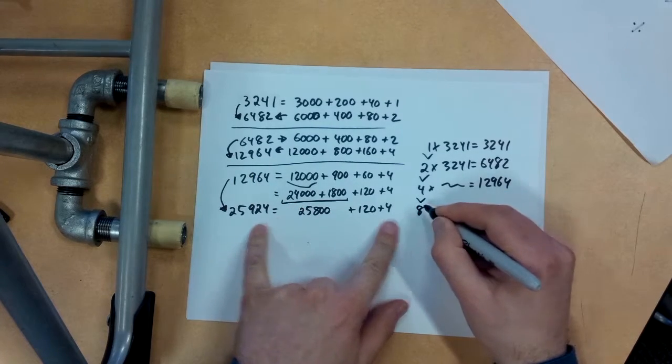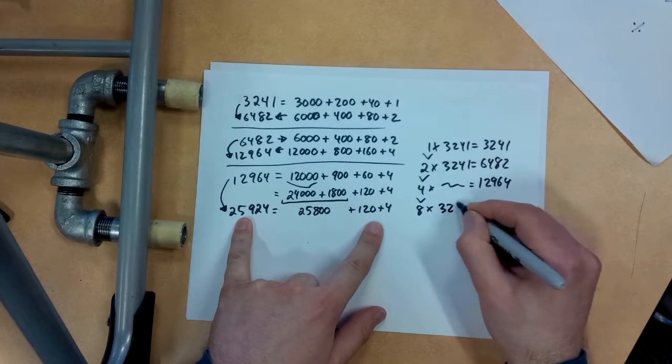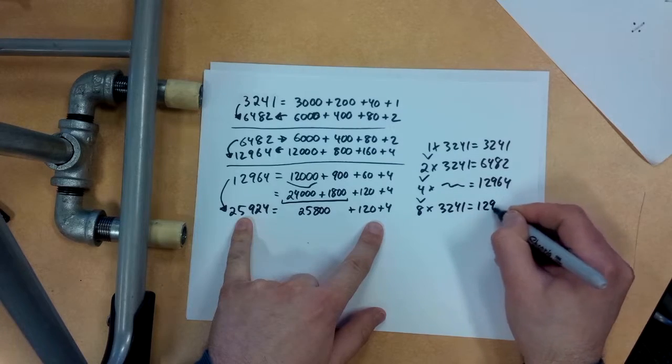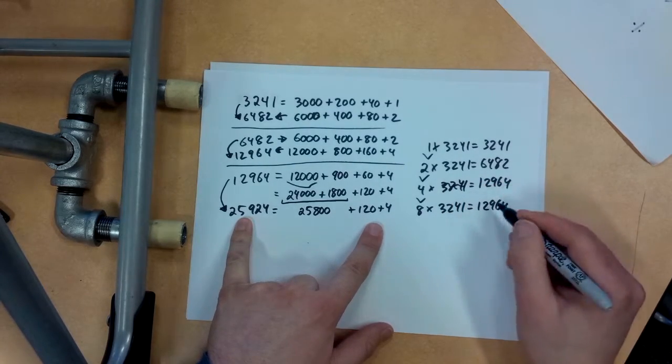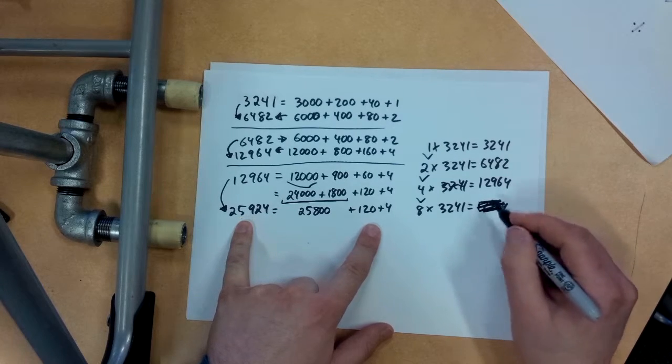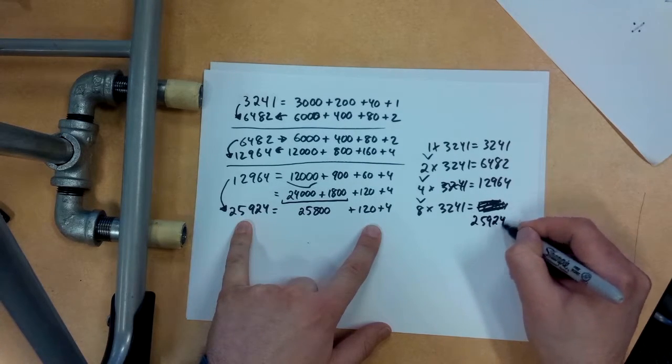And then if I double that again, 8 times that number equals 25,924.